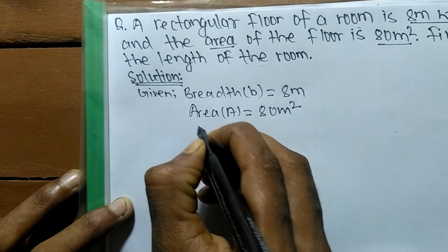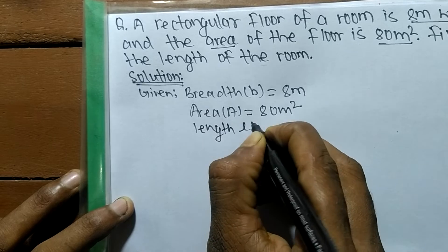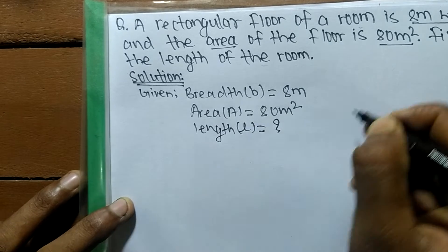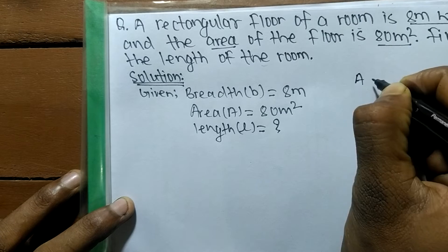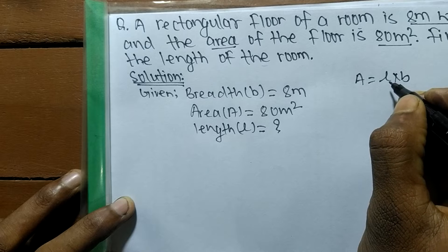Find the length of the room. What we have to find out is length, which we denote by l. The area of a rectangle A is equal to l times b.